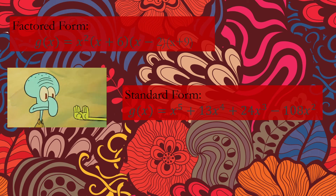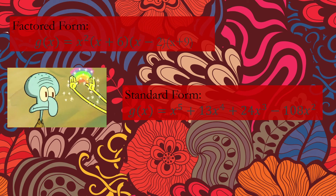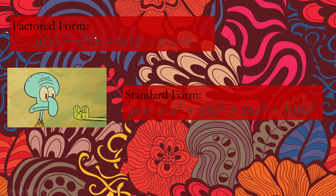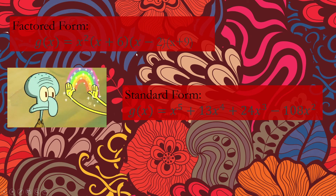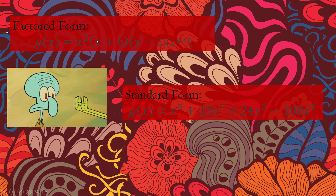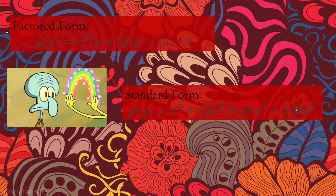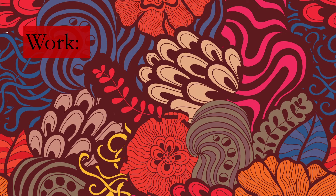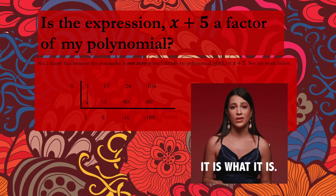The next part is converting from factored form to standard form. You multiply two factors at a time: I multiplied (x + 6)(x − 2), combined like terms, then multiplied by (x + 9), combined like terms again, and finally distributed x squared to that result. On your next slide you would show your work for this process.